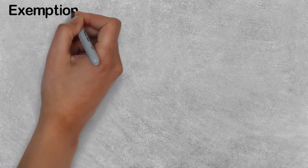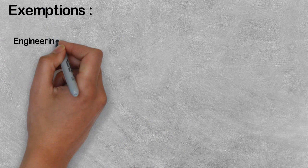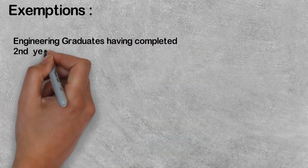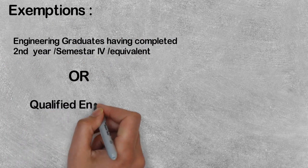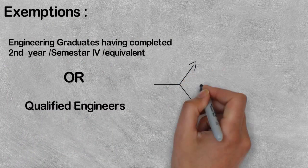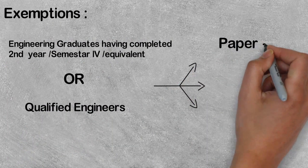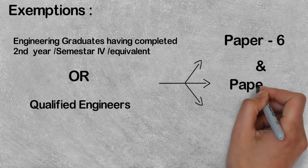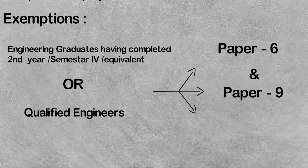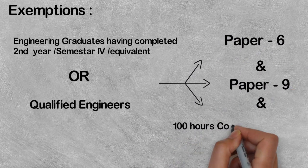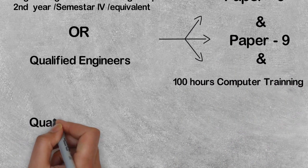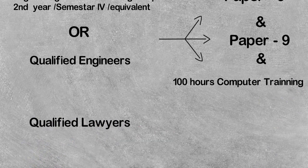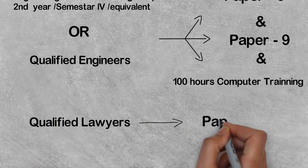There are also some exemptions in the Intermediate course. Engineering students in second year or above, and qualified engineers, are exempt from Paper 6 and Paper 9. Qualified lawyers also have an exemption — they do not need to give Paper 6.